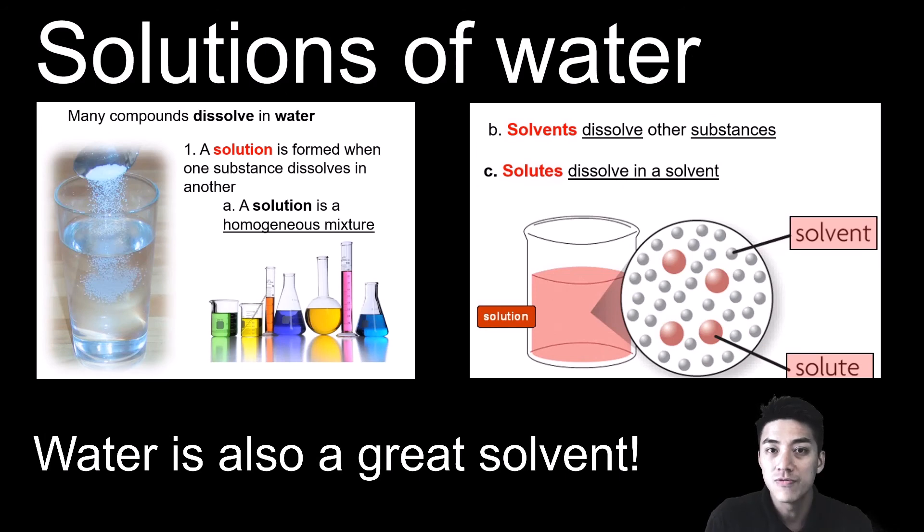Many of the important vital functions in your body require solutions. Typically, solutions are made from water because water is such a great solvent. The solvent is the thing that does the dissolving. The solute is the thing that's dissolved in the water. When you put the two together, you have a solution. And it makes sense because your body is mostly made of water. It can dissolve a lot of different things.